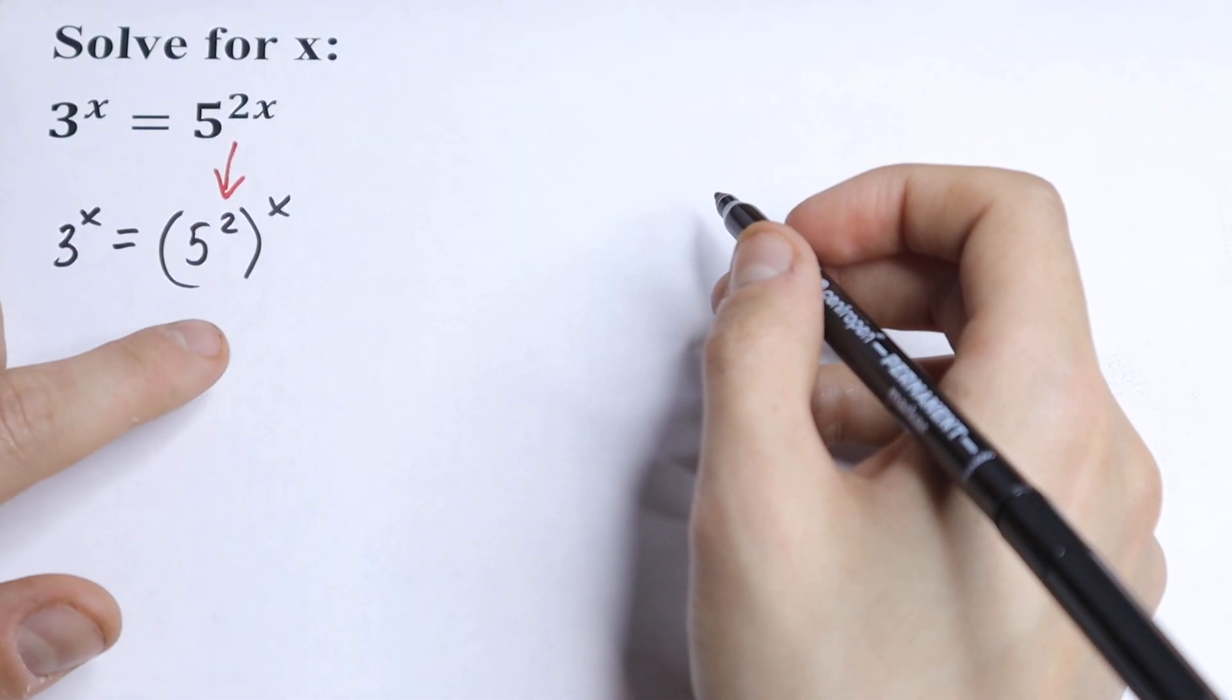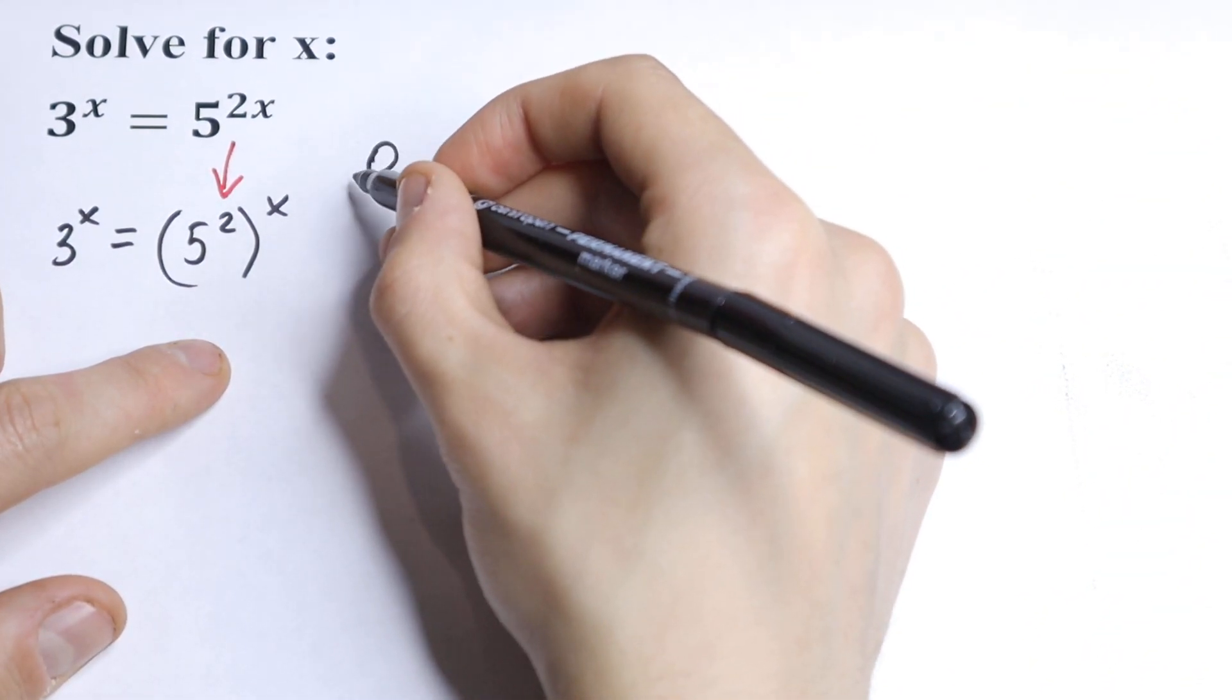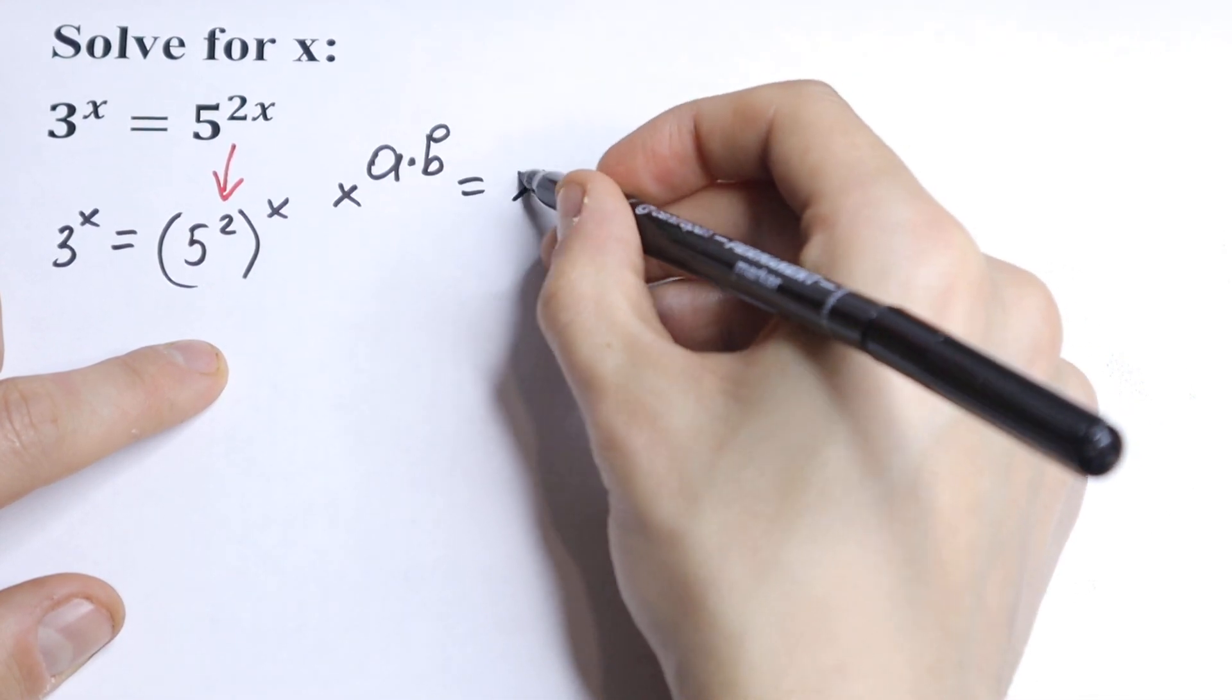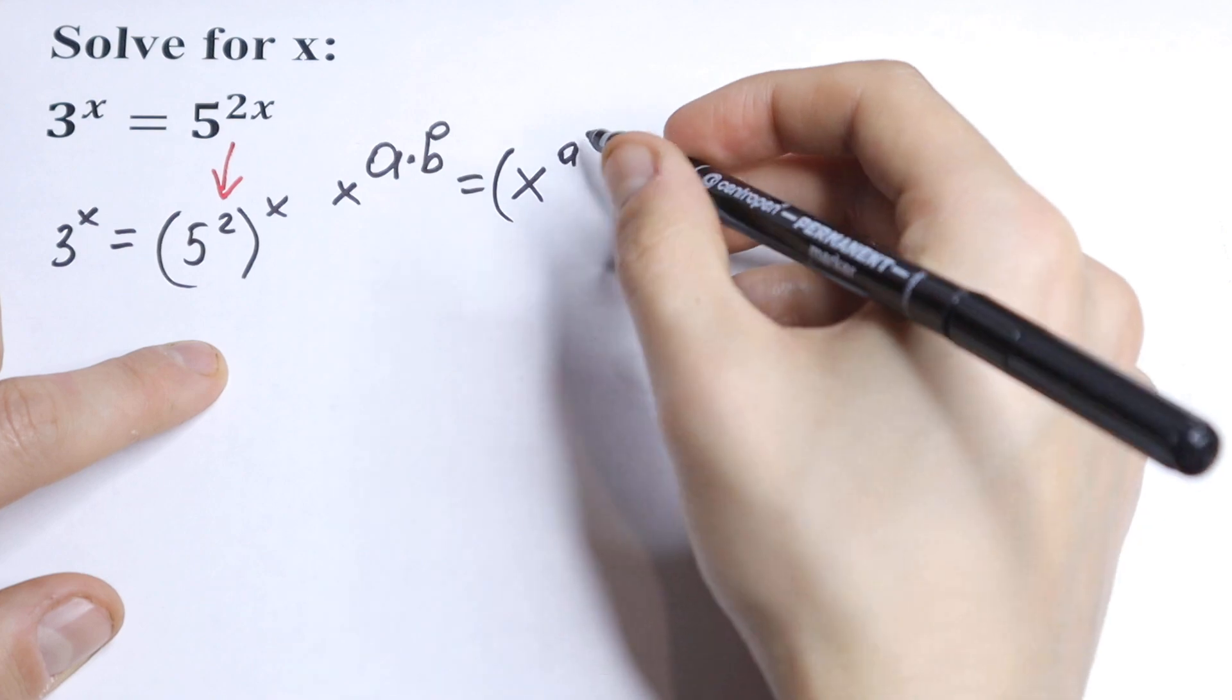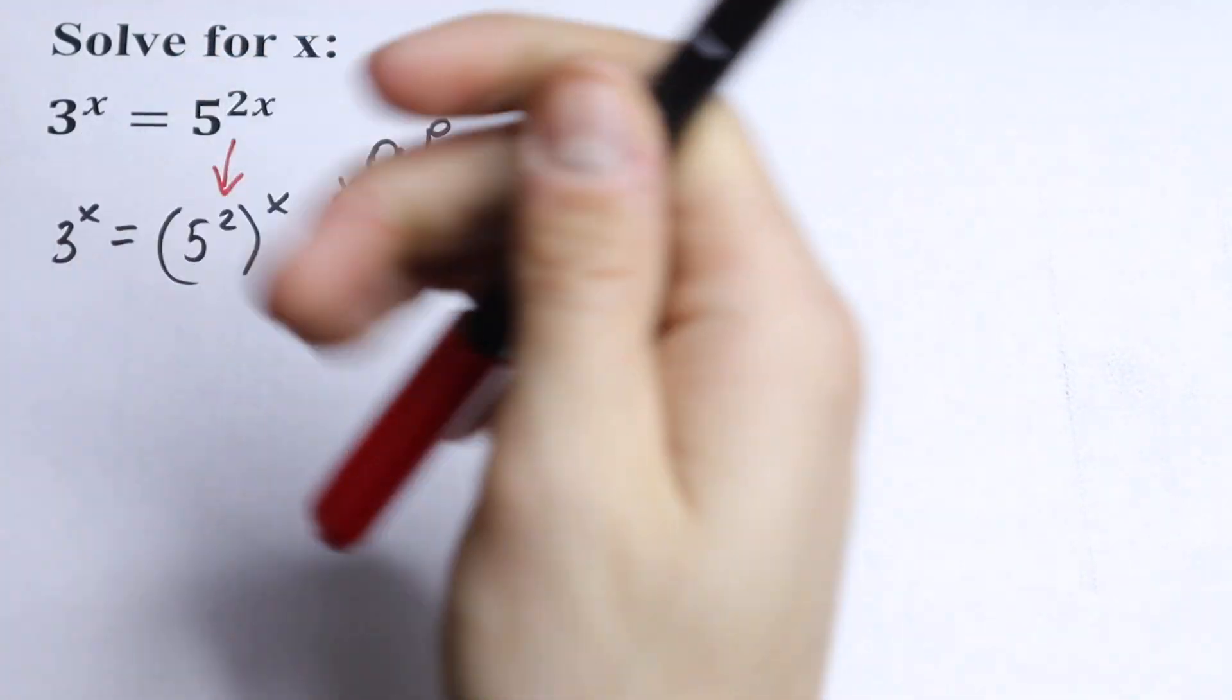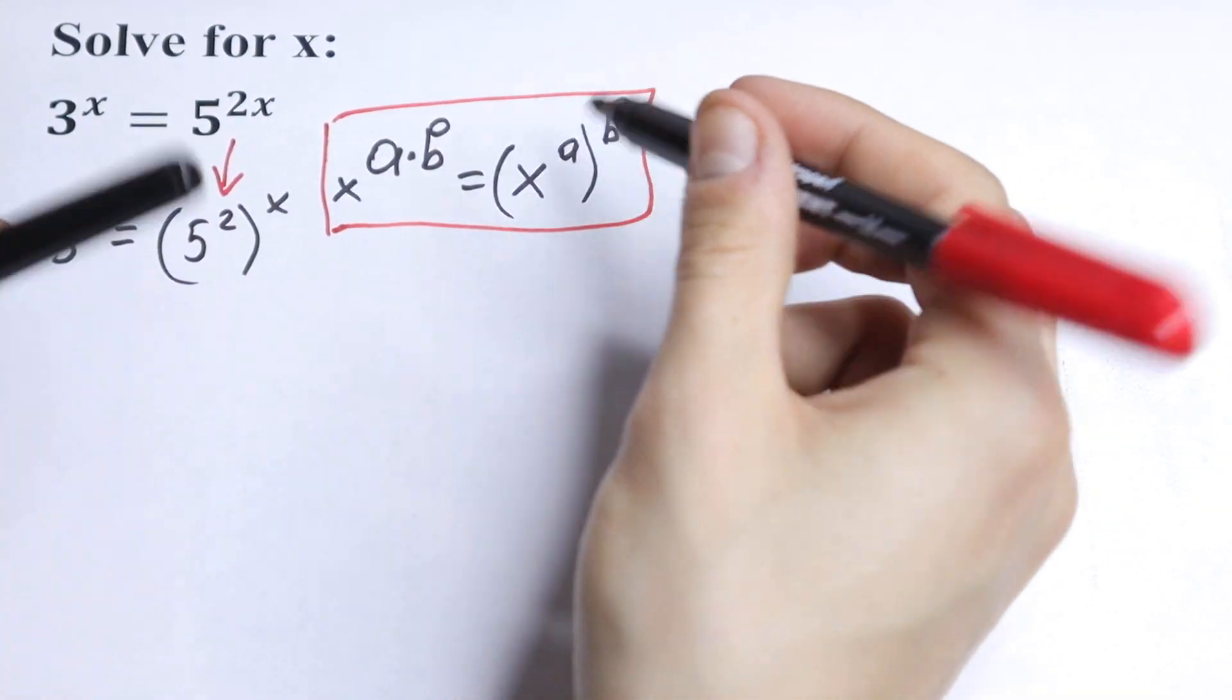I think you understand this step because we know the rule that x to the power a times b we can write as x to the power a raised to the power b. This is a good rule, so learn this rule or remember this rule. And of course I use this rule right here.